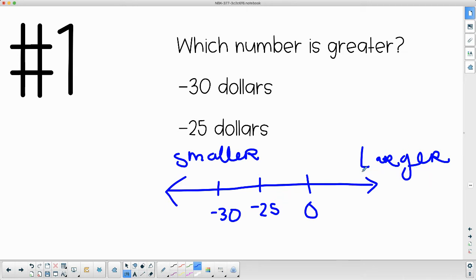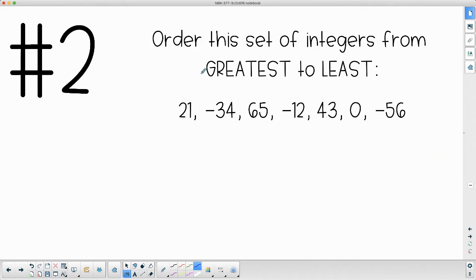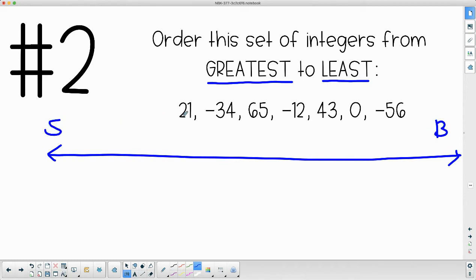Number two asks us to order these from greatest to least. If we're thinking of our number line, our big numbers are over here, our small ones are over here. I'm going to stick zero in the middle to give us some reference. Twenty-one is on the positive side, and here's our negative side. We've got 21, then negative 34 will be over here. Sixty-five we know is bigger than 21, but negative 12 will go in between here. We've got 43 that will go in between 21 and 65. We've got zero which we already have here, and then negative 56 is going to be over here.